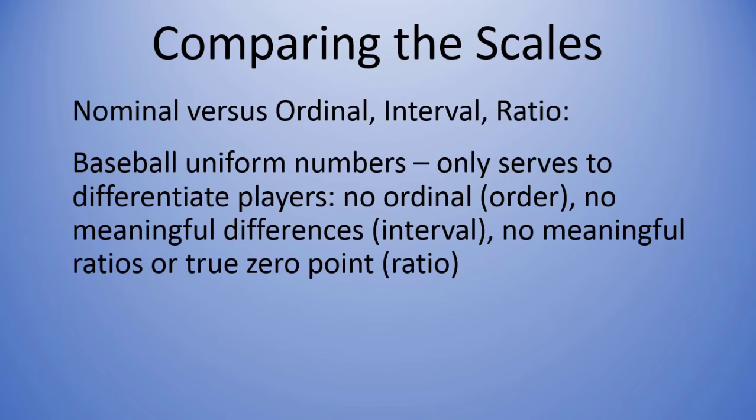And then ratios are not meaningful, and there's no true zero point. Think of someone who chose the number zero in baseball. That doesn't mean there's an absence of a baseball player there, right? Zero means nothing. That would just be a player with the number zero. So that's why baseball wouldn't be ordinal, interval, or ratio. All right, that's it for scales of measurement. Thanks for watching.